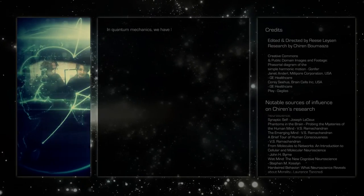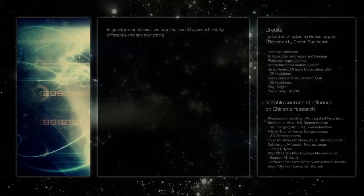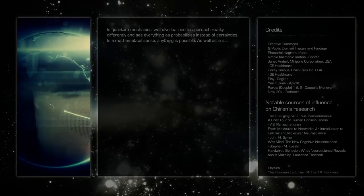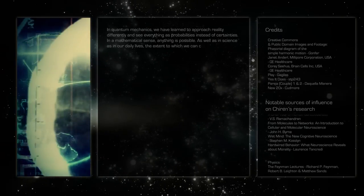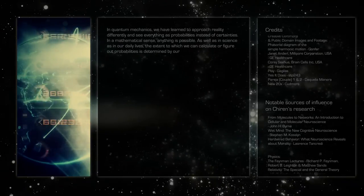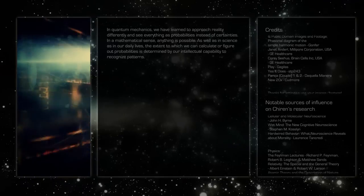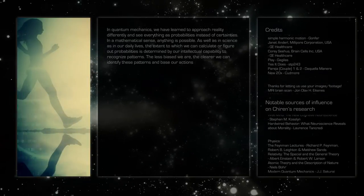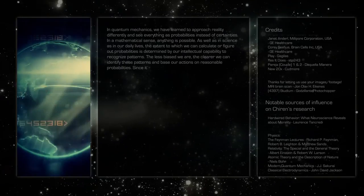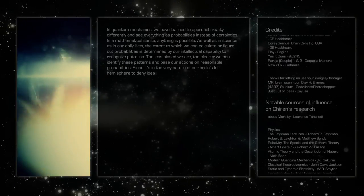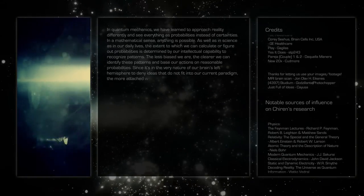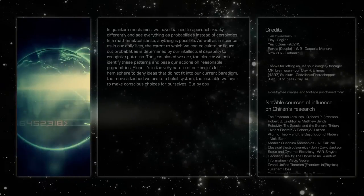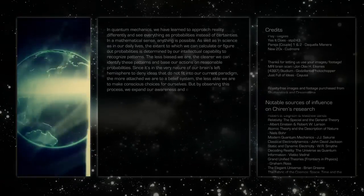In quantum mechanics, we have learned to approach reality differently and see everything as probabilities instead of certainties. In a mathematical sense, anything is possible. As well as in science as in our daily lives, the extent to which we can calculate or figure out probabilities is determined by our intellectual capability to recognize patterns. The less biased we are, the clearer we can identify these patterns and base our actions on reasonable probabilities. Since it's in the very nature of our brain's left hemisphere to deny ideas that do not fit into our current paradigm, the more attached we are to a belief system, the less able we are to make conscious choices for ourselves. But by observing this process, we expand our awareness and enhance our free will.